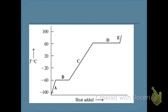Next question: where is kinetic energy changing? Kinetic energy is measured by temperature, so that would be A, C, and E — those are all parts where temperature is changing. If temperature is changing, and temperature measures kinetic energy, then kinetic energy is changing as well. Next: find the melting point and the boiling point of this substance.